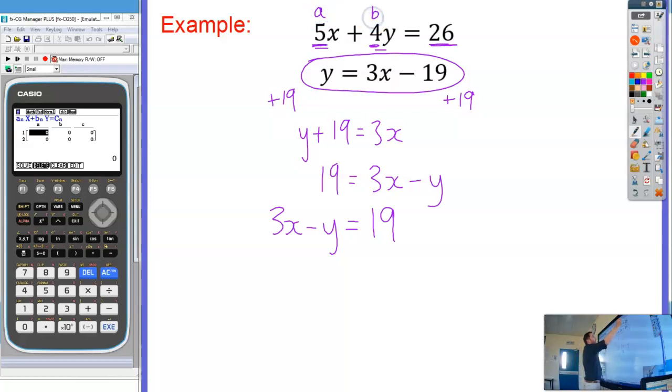On my second equation, A is going to be 3, B is going to be negative 1, and C is going to be 19. So let's put those in. The first one we've got simply 5, execute, 4, execute, and 26, execute.